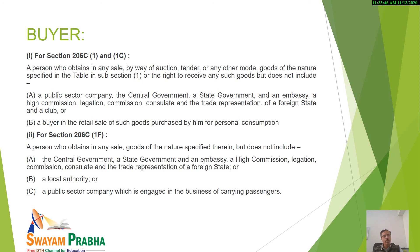For section 206C subsection 1F, a person who obtains in any sale goods of specified nature but doesn't include central government, state government, embassy, high commission and trade representation, consulate, foreign state. Also a local authority and a public sector company which is engaged in the business of carrying passengers — provisions are not applicable on these; they will not be included under the definition of buyer.